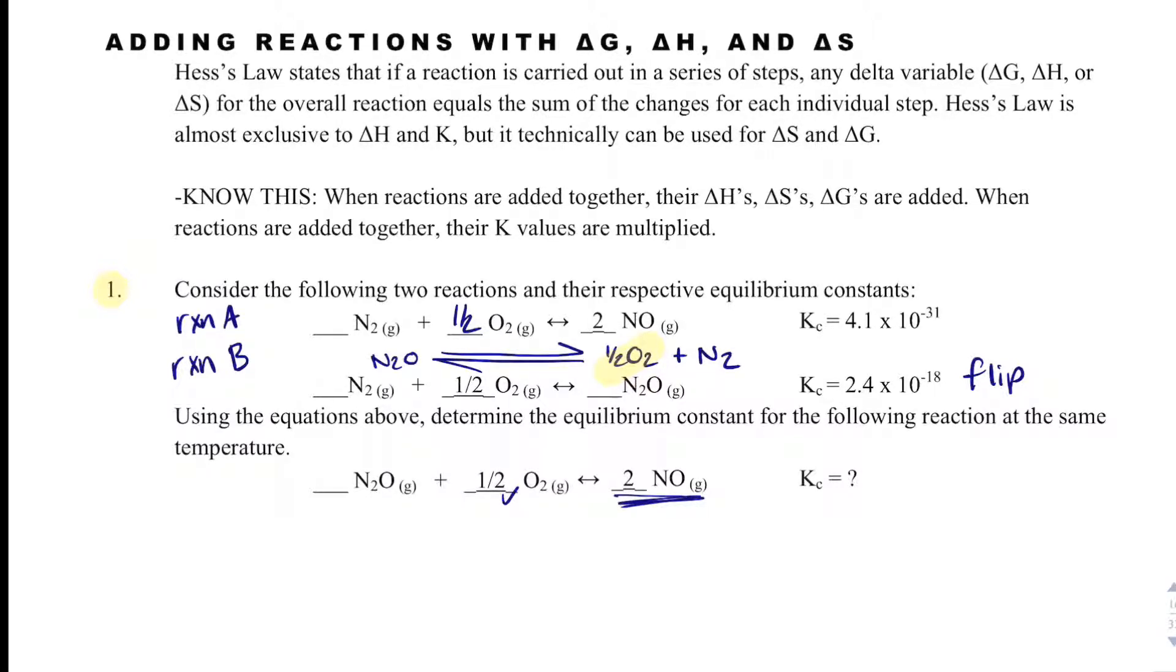I have two NOs, and those are on the correct side with the correct coefficient, so I don't think I need to mess with reaction A. Nitrogens would cancel, which is what I need, because I have no N2O in my overall reaction.